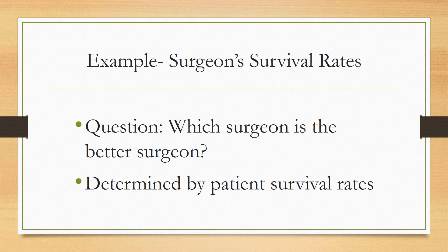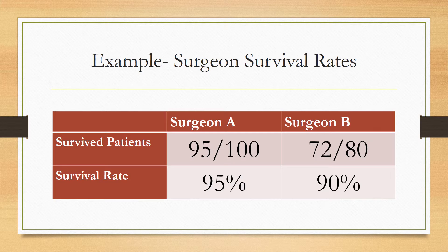Another example we will look at is surgeon survival rates. The main question is: which surgeon is the better surgeon? We will determine this by patient survival rates. Surgeon A operated on 100 patients and 95 survived, giving a 95% survival rate. Surgeon B operated on 80 patients and 72 survived, for a 90% survival rate. Based on this overall data, you would pick Surgeon A. But let's look at some more data.